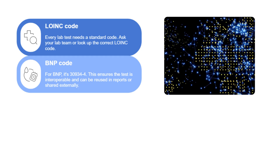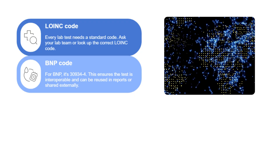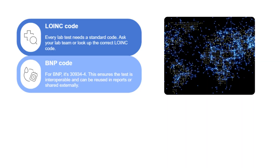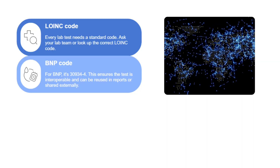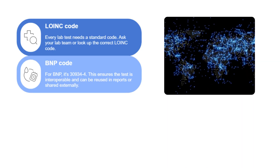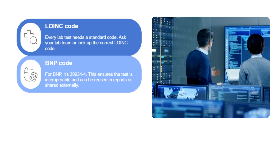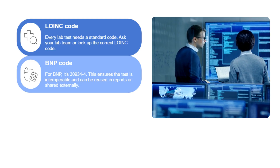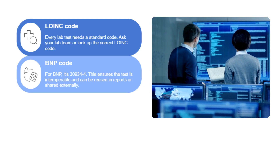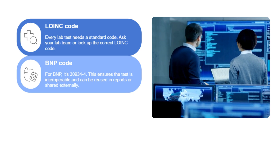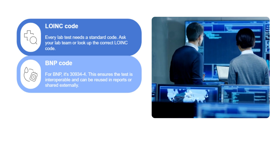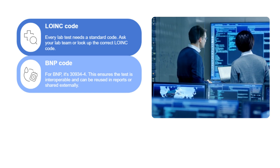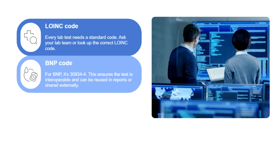Manually mapping LOINC codes takes forever and is definitely prone to human error. But now we're seeing AI models emerge that can parse free-text lab test names using natural language processing and suggest appropriate LOINC codes, significantly cutting down the manual effort. AI-powered tools can even scan incoming data streams for common unit discrepancies or contextual errors based on learned patterns, flagging potential issues before they ever reach a clinician's screen.